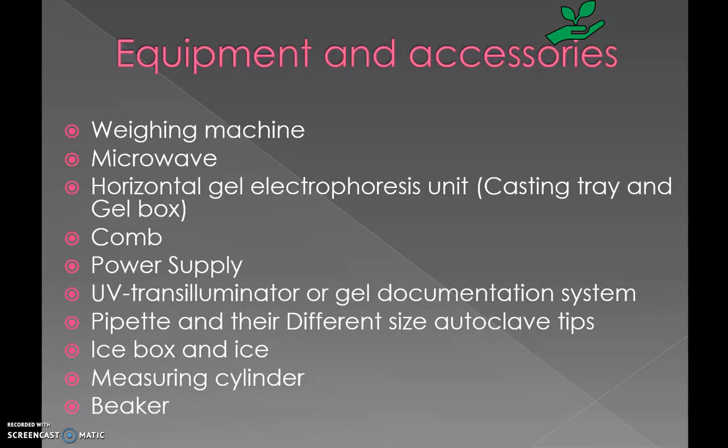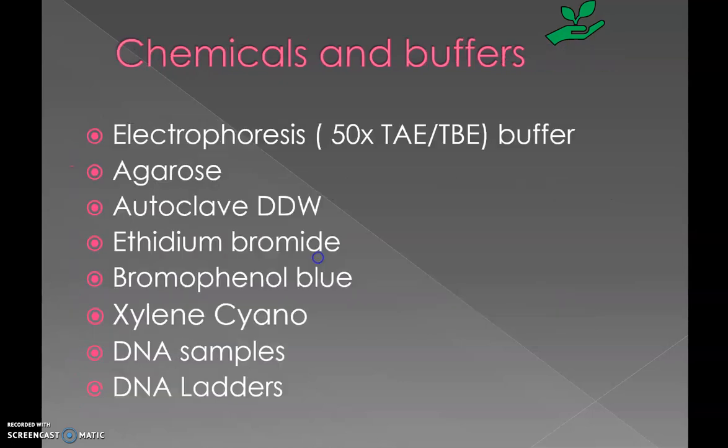The main equipment needed is a horizontal gel electrophoresis unit and UV transilluminator or gel documentation system. Other instruments are common and present in the molecular biology laboratory. The chemicals mainly used are TAE or TBE buffer, agarose, autoclaved double-distilled water, ethidium bromide, bromophenol blue, xylene cyanol, DNA samples, and DNA ladder.